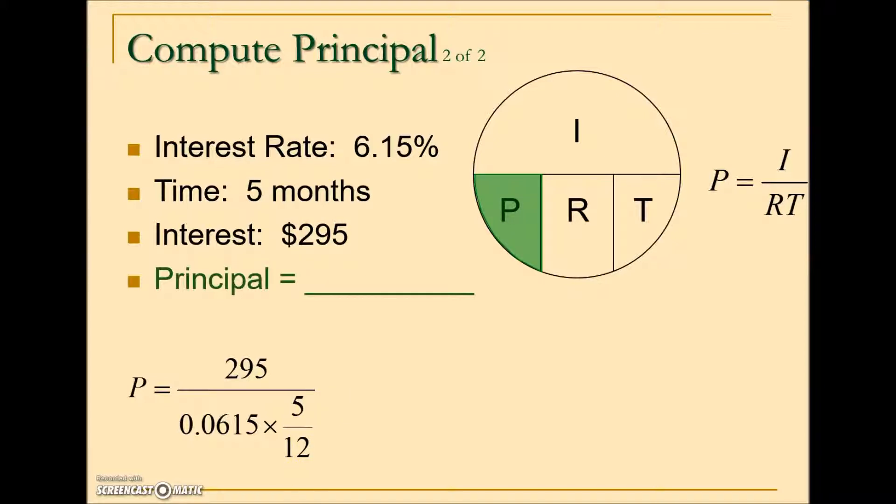You have the choice of how you want to simplify this: simplify the denominator or enter it as one long string in your calculator. To do that, it would be 295 divided by left parentheses .0615 times 5 divided by 12, end parenthesis, and hit equals. If you choose to simplify the denominator, here's the value we get, and again we need to take 295 divided by that simplification of our original formula to get the correct answer.